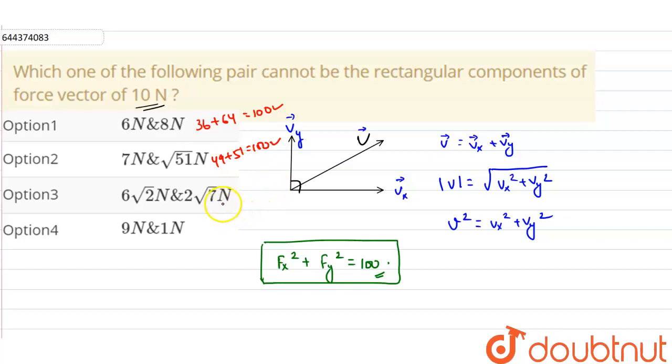Third option is 6 root 2 and 2 root 7, so this will be equals to 36 cross 2 plus 4 cross 7. From here it will be equals to 72 plus 28, that is 100, again it is satisfying the relation.